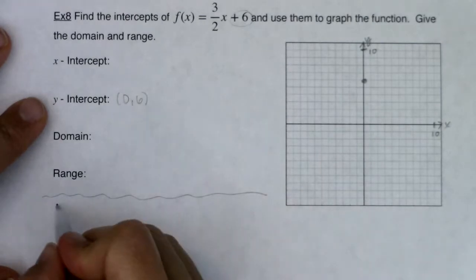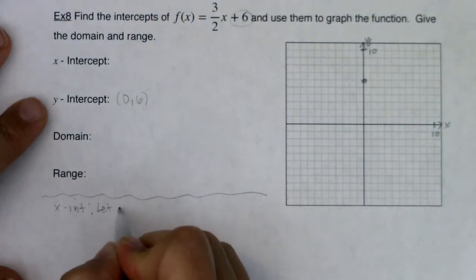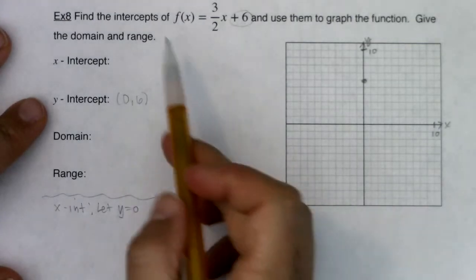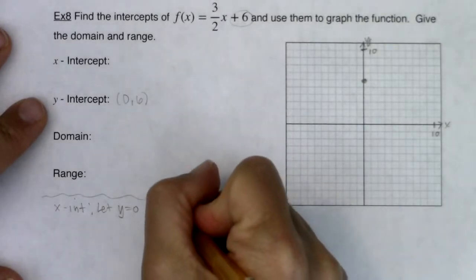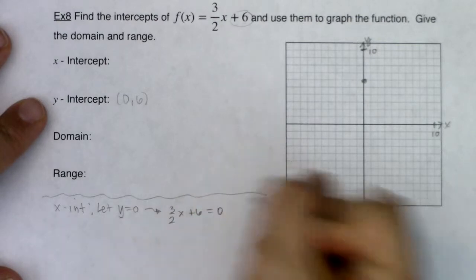Let me put a little bit of a division line here, a separation. So we're going to say x-intercept, I always want to let y equals zero, which in this case means let f(x) equals zero. So here I want to let my function itself, three halves x plus six, be equal to zero.